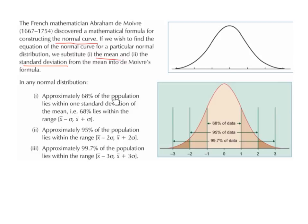approximately 68% of the population lies within one standard deviation of the mean, i.e. 68% lies within the range of the mean minus the standard deviation, comma, the mean plus the standard deviation.